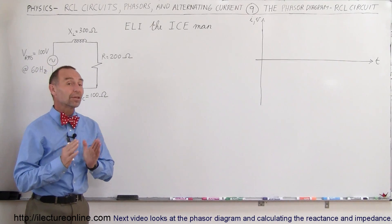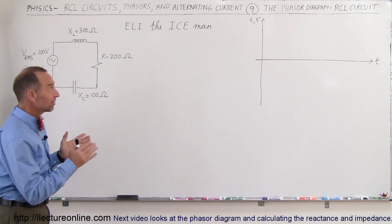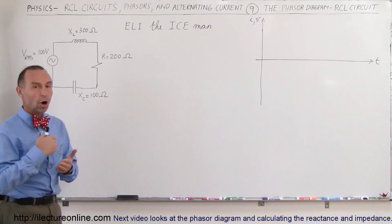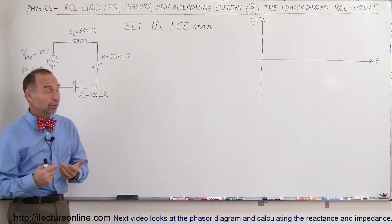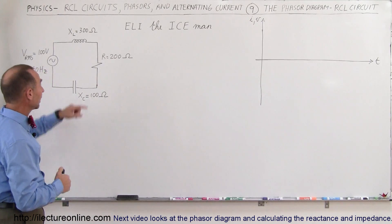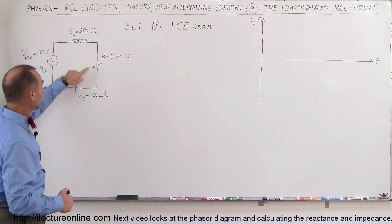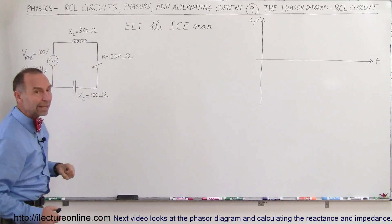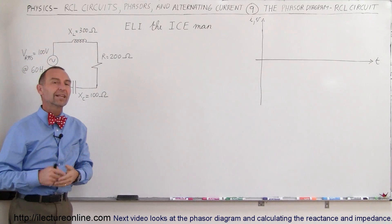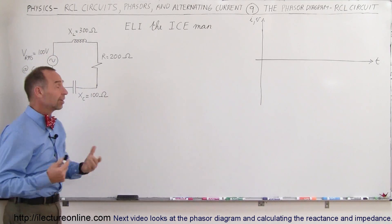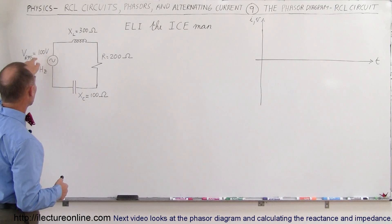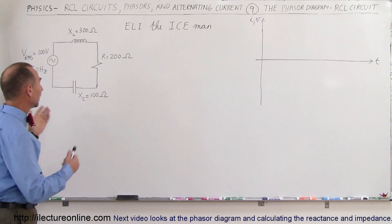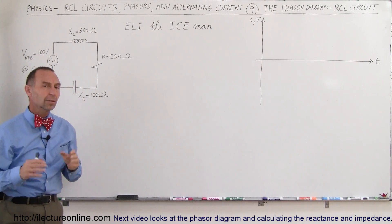Welcome to our lecture online. We're going to take a look at a phasor diagram in the context of what we call an RCL circuit. An RCL circuit is a circuit that has a resistor, a capacitor, and an inductor along with an oscillating voltage source. Let's say our voltage source puts out 100 volts RMS at 60 Hz — so what will this circuit look like?